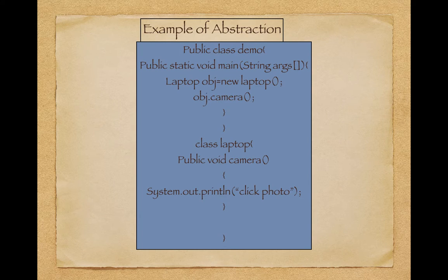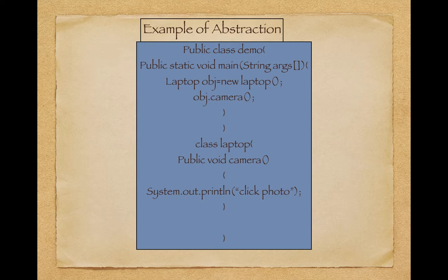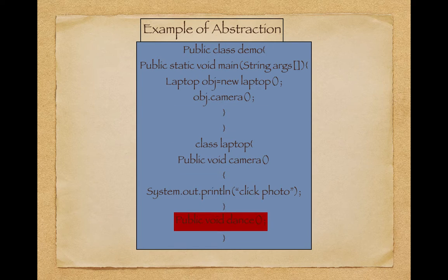Now let's see an example of abstraction in terms of programming. I have a quite simple Java program where I have a class called Demo, which is the main class, and a class called Laptop. In the Laptop class I have a method called camera, and this camera method prints 'click photo.' In the Demo class I have created an object of the Laptop class and called the camera method, so when we run this program it will print 'click photo.'